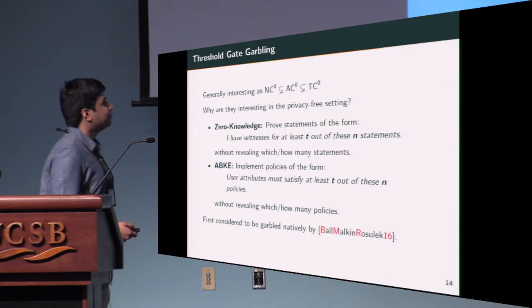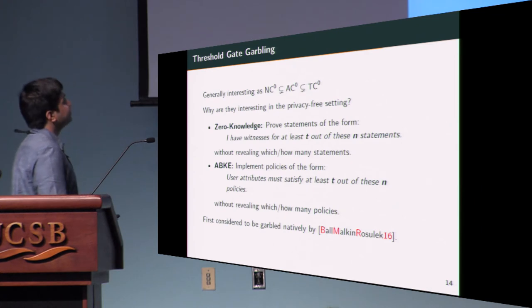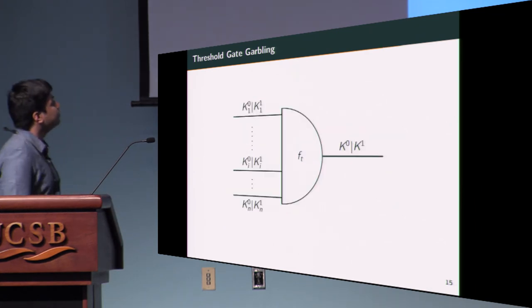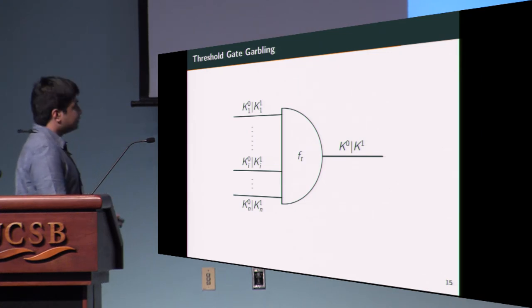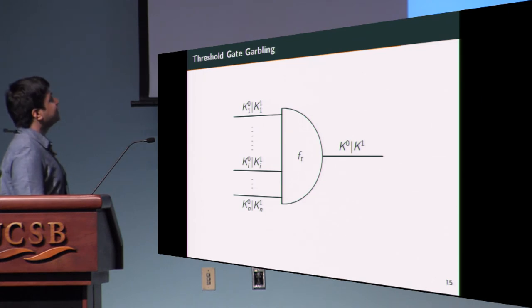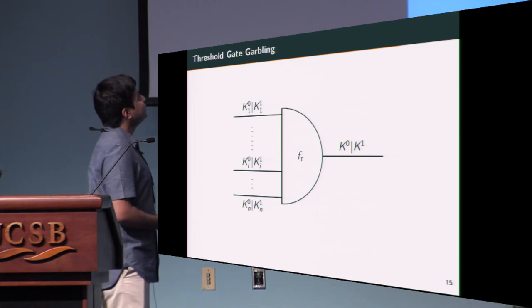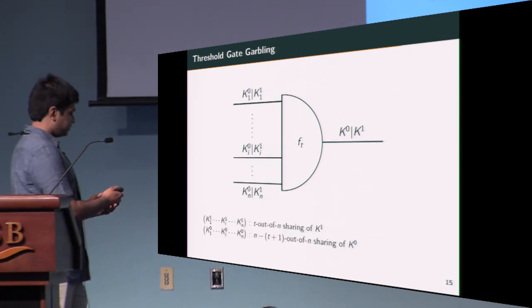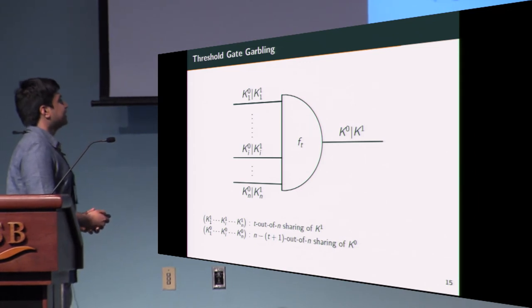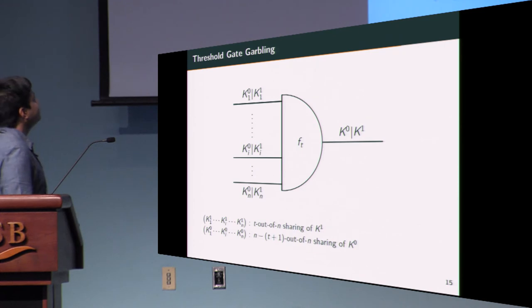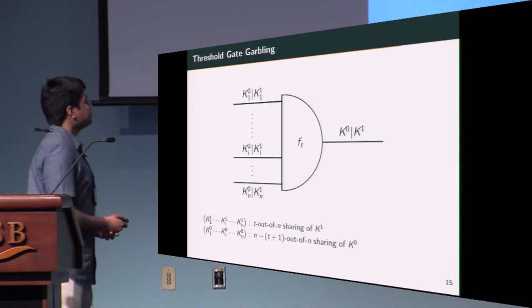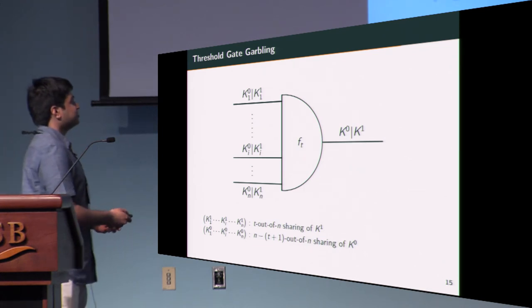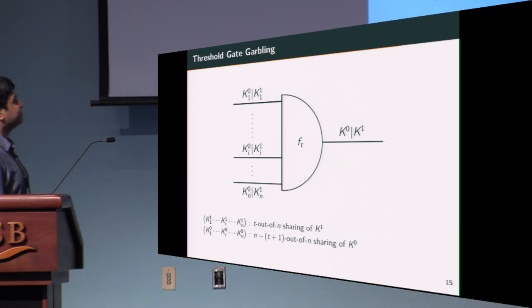They were first considered to be garbled natively by Ball and others in the CCS 2016 work. Let's take a look at the construction. The terminology is as follows: if there are N input wires, the ith wire has keys Ki0, Ki1 corresponding to semantics 0 and 1 on it, and the output keys are K0, K1. It's quite simple, really: the one key, K1, is T out of N shared in order to produce the input one keys. So the Ki ones comprise the T out of N sharing of K1. We also require that the zero key not be accessible unless the evaluator is under the threshold of the ones that he requires, so the Ki zeros comprise an N minus T plus 1 out of N sharing of K0. Why do we do this?